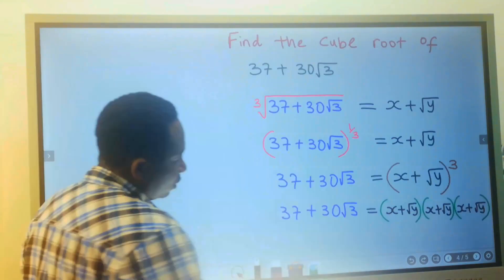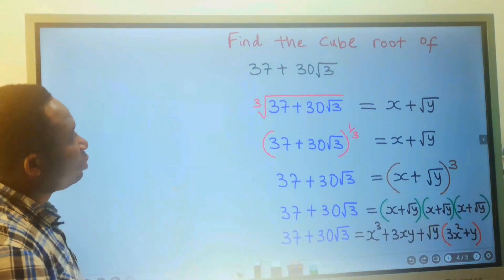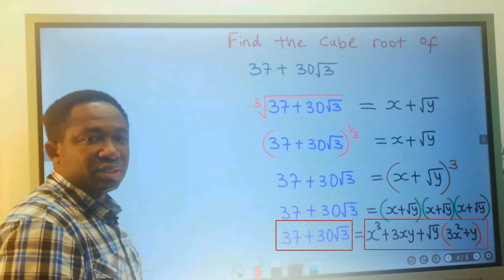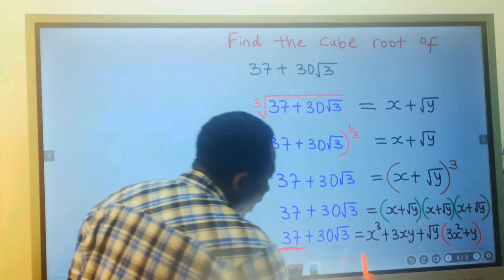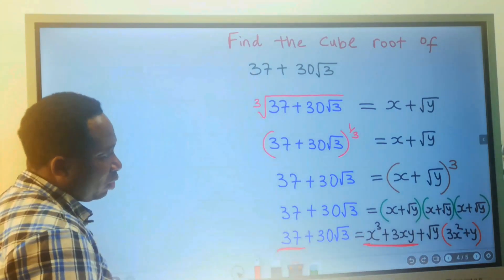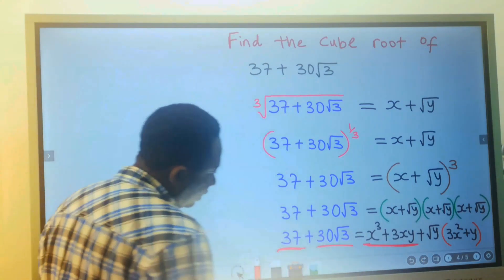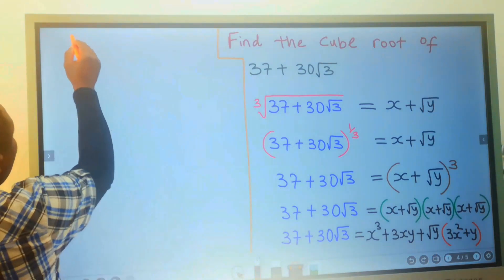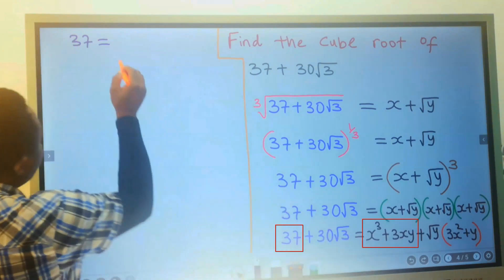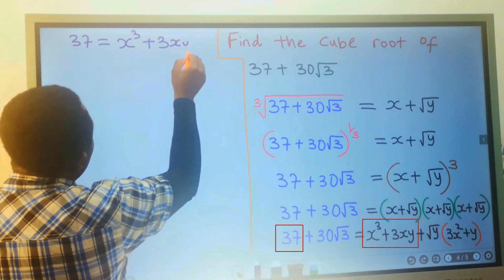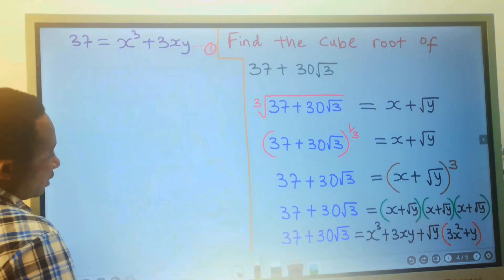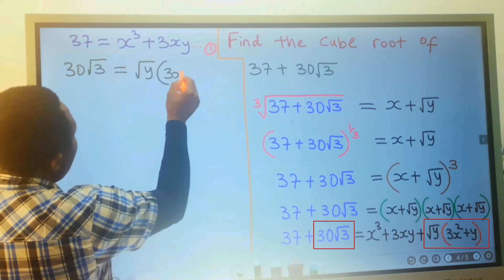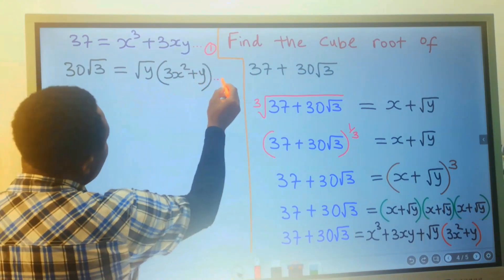Next, I will compare both sides. 37 has no square root, so I compare it with x cubed plus 3xy — this is equation 1. Then I compare 30 root 3 with the part that has a square root: 30 times the square root of 3 equals the square root of y times (3x squared plus y) — this is equation 2. Equation 1 is a polynomial function while equation 2 is a quadratic function.